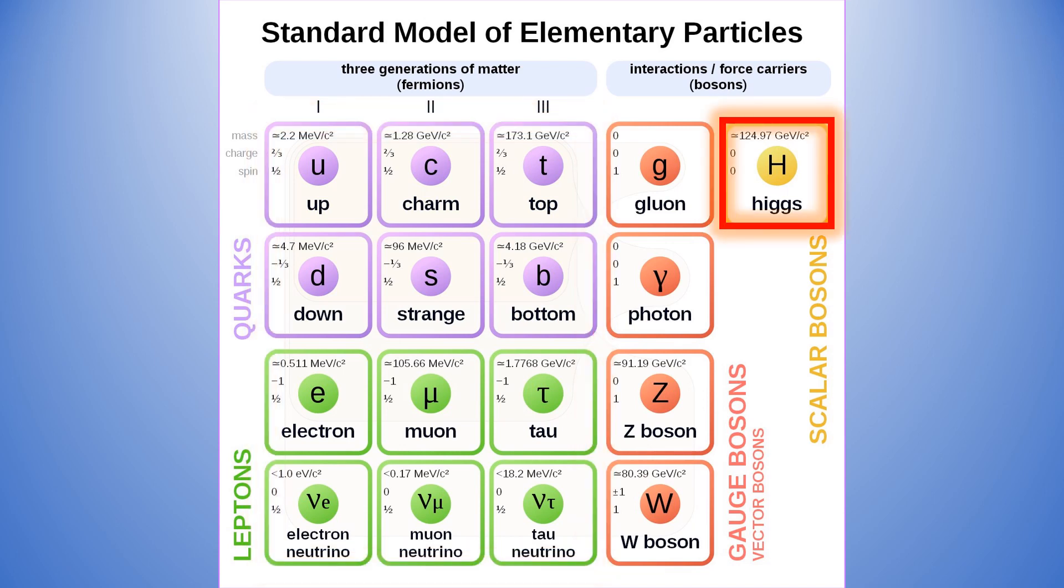Besides the fermions and gauge bosons, there is only one more particle in the standard model, which is the Higgs boson. It is massive and is not a gauge boson. The Higgs is electrically neutral and its task is to give mass to the fermions and the massive gauge bosons.